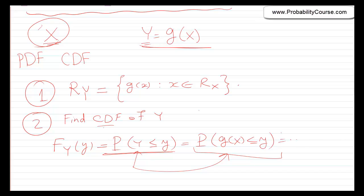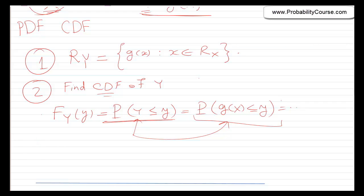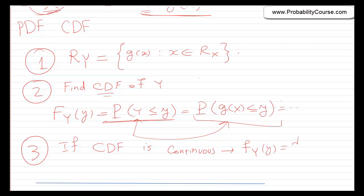After finding the CDF, I look at it. If the CDF is a continuous function, that means y is a continuous random variable, and I can find its PDF by differentiating the CDF. If the CDF is not continuous, then y is either a mixed or discrete random variable. In any case, we should be able to find the CDF of y. Let's look at an example to apply these steps.